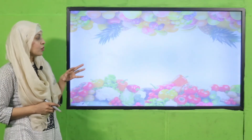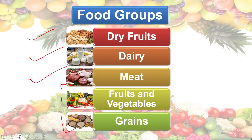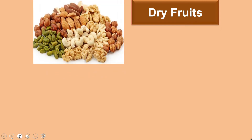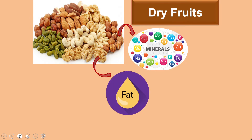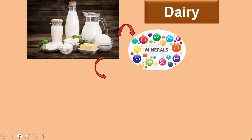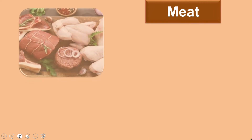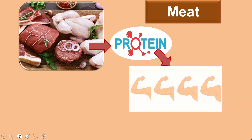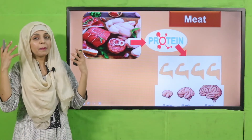So my dear students, these are the three groups we have studied today: dry fruits, dairy, and meat. Dry fruits like cashews, almonds, and apricots provide important minerals and fat, and keep us warm. Dairy products are made from milk - they provide minerals and protein and make bones strong, helping us in growth. Meat provides protein which helps in muscle building and brain development. Beans also provide protein.